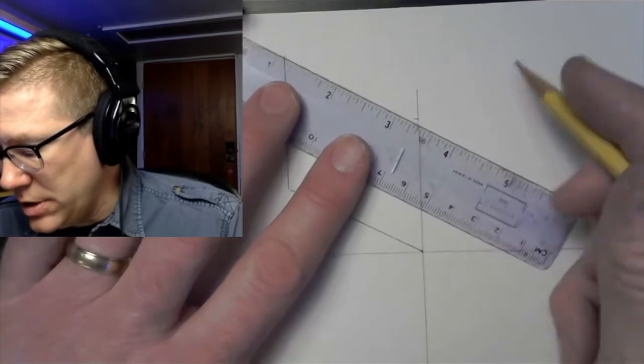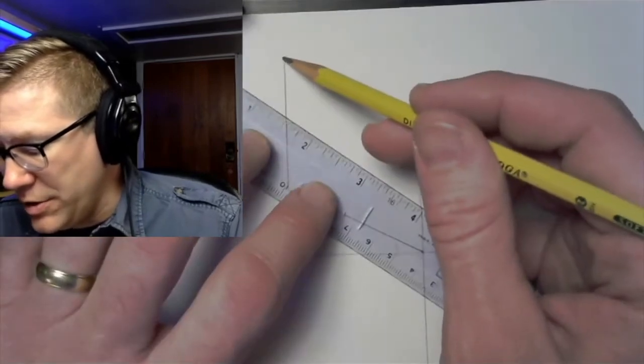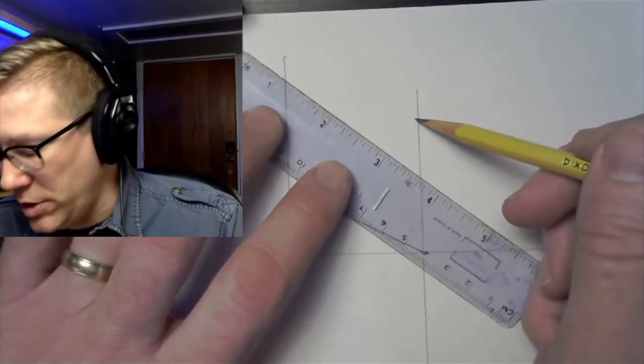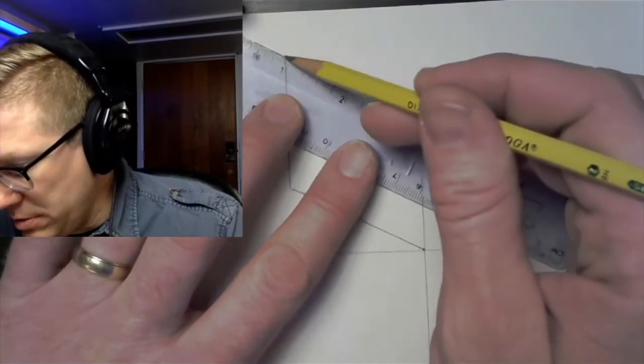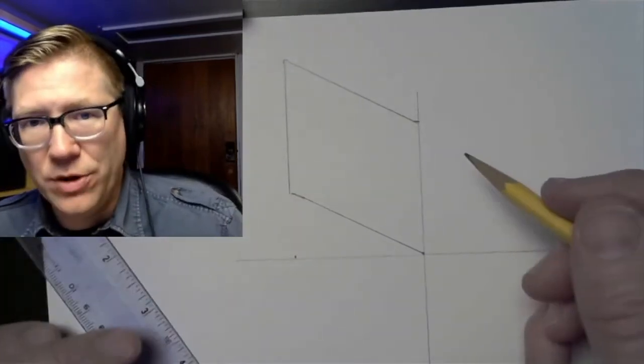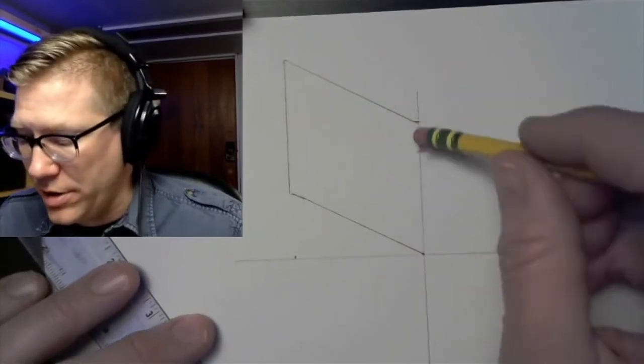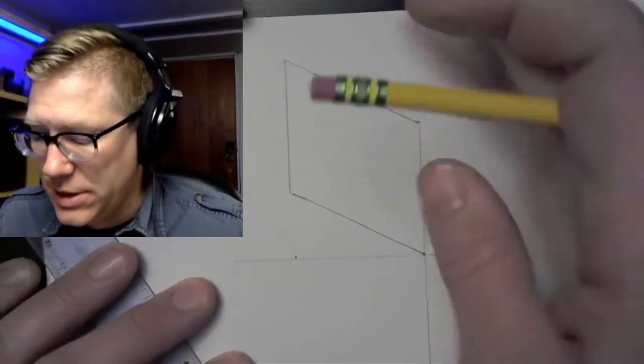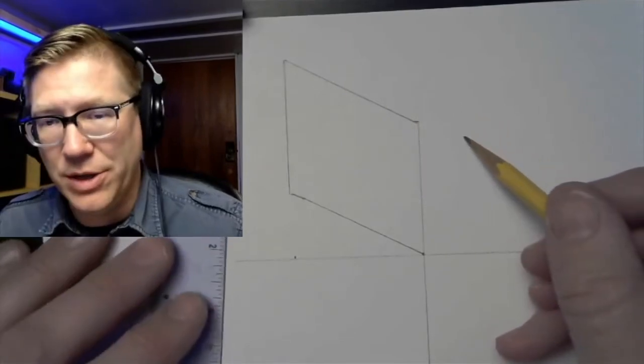Finally I'm going to take my ruler and go between this point here and this point here that I made earlier and I'll draw a line to connect those two points. Again this isn't quite perfect and you can see I'm about to run out of space on the top part of this but it's kind of an easy way to get started with doing isometric drawing on plain paper.